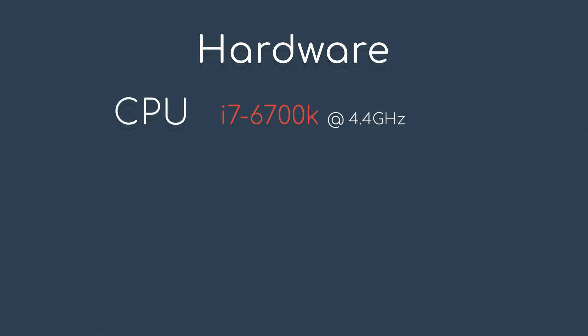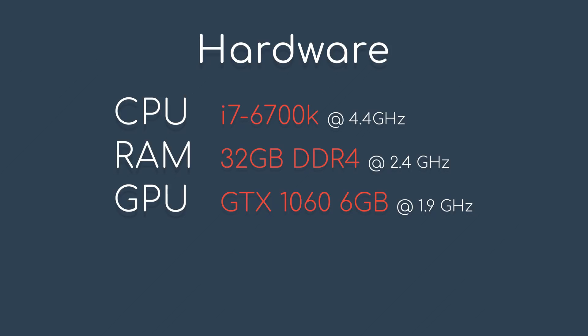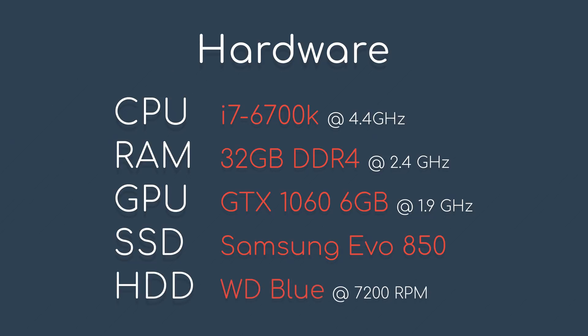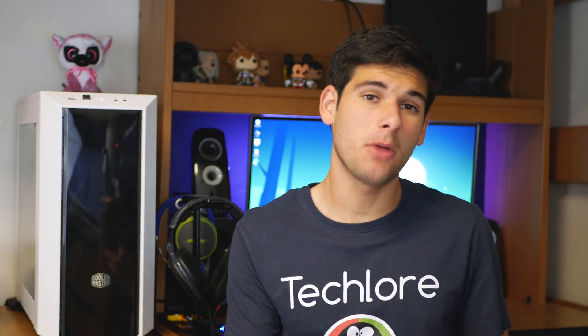On the hardware side of things, I did all of my testing on my main editing rig with an i7 6700K, 32GB of DDR4 RAM, a GTX 1060 6GB graphics card, a 500GB Samsung 850 EVO as my main boot drive, and a 7200 RPM WD Blue 1TB hard drive as my secondary storage drive. It is important to note that this is a very high-end machine, so disabling your antivirus might make a smaller difference than if you do it on a weaker computer.